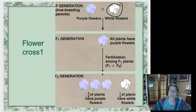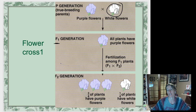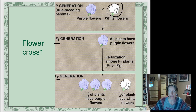The P means the parental generation, and then F1 stands for the first generation of offspring, and F2 is the second generation of offspring. F actually is Latin and it stands for a Latin word which is 'filial,' which means son.